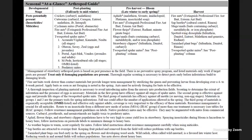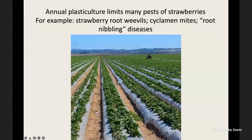One thing to note before getting into specific pests: annual plasticulture practices do limit many pests of strawberries. For example, strawberry root weevil and cyclamen mites — this particular production system helps minimize the impact of those pests as well as root-nibbling diseases.